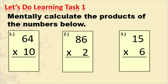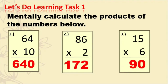Let's try to do learning task 1. Mentally calculate the products of the numbers below. Number 1: 64 times 10 is 640. Number 2: 86 times 2 is 172. Number 3: 15 times 6 is 90.